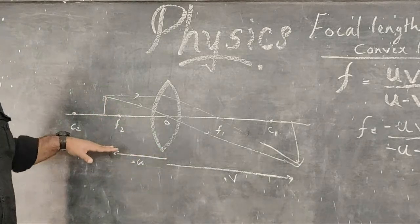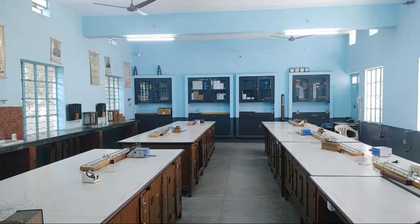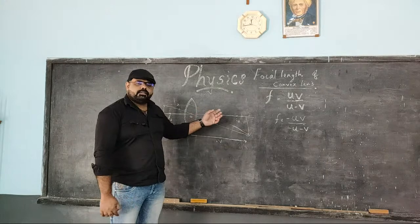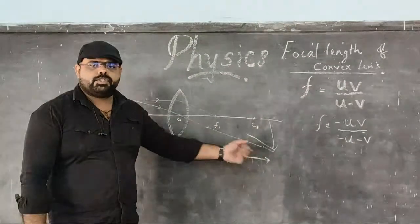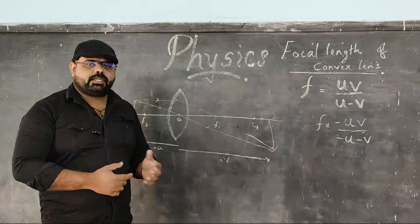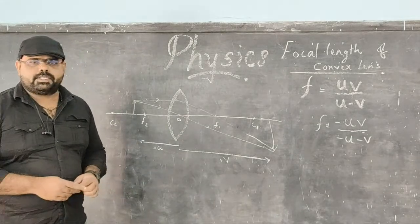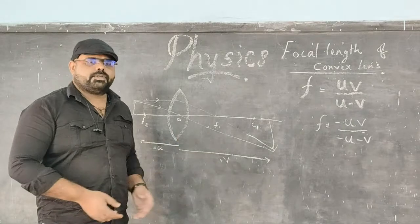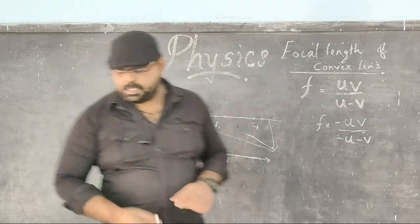With the help of the distant object method, we will first find what the approximate focal length of the convex lens is. Using that approximate value, we will then proceed with the UV method. After finding the focal length from the UV method, we can compare it with the distant object method result. So both methods together we are going to do today.